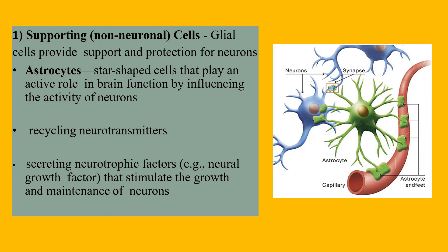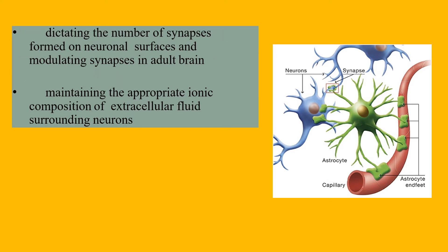Astrocytes also dictate the number of synapses formed on neuronal surfaces and are involved in modulating synapses in the adult brain. They also maintain the appropriate ionic composition of the extracellular fluid surrounding neurons.